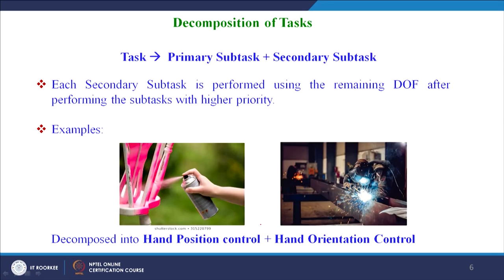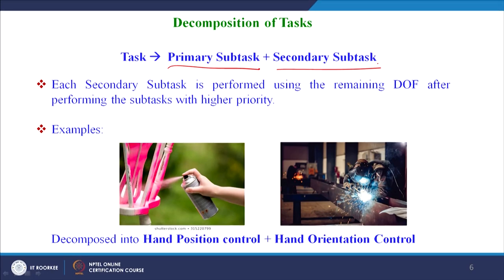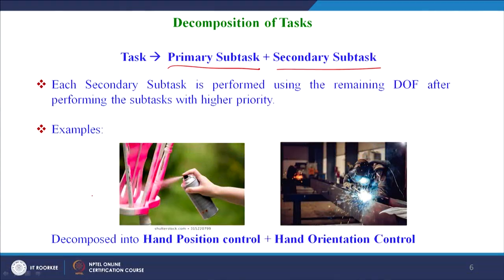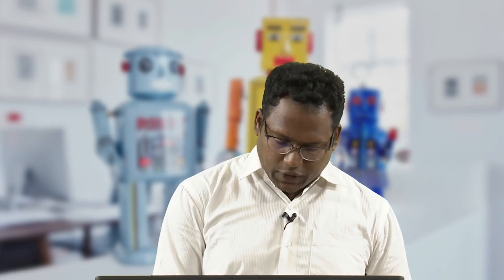Now coming to the methodology, which is the decomposition of task. The task given to a redundant manipulator is decomposed into a primary subtask and secondary subtask, where the primary subtask is the major task with higher priority and the secondary subtask is performed after the primary subtask. For example, in spray painting and welding tasks, the task can be decomposed into two subtasks: hand position control and hand orientation control, where hand position control is the one with higher priority.